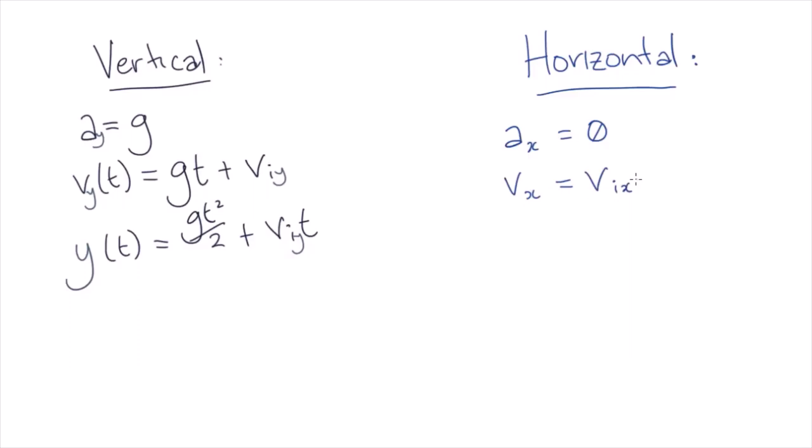So our horizontal displacement is just equal to our initial velocity times time plus any initial horizontal displacement.